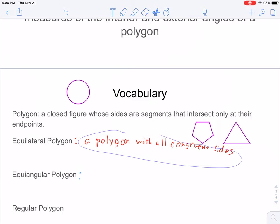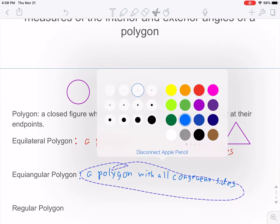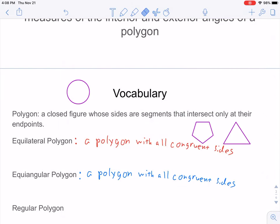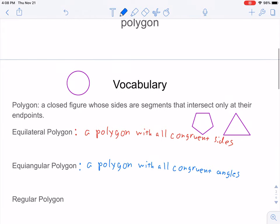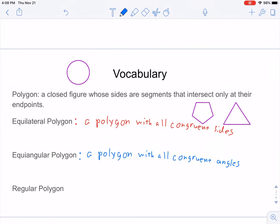And then, to hopefully save some time, I'll just copy and paste here and turn this blue and then erase one word and write a new one. So maybe I'm not saving time. There we go. So, an equilateral polygon has all congruent sides.